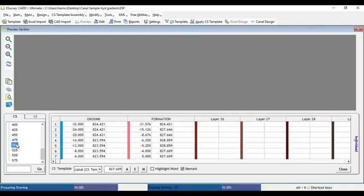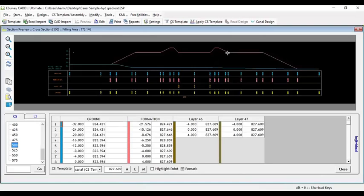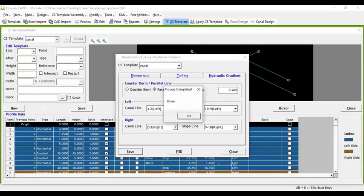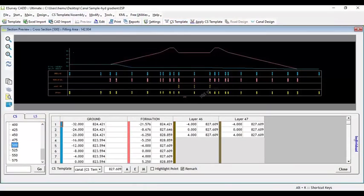You can see output section after applying hydraulic gradient line with counter berm option. In case if you have selected parallel option in hydraulic gradient line, then output section will appear like this.